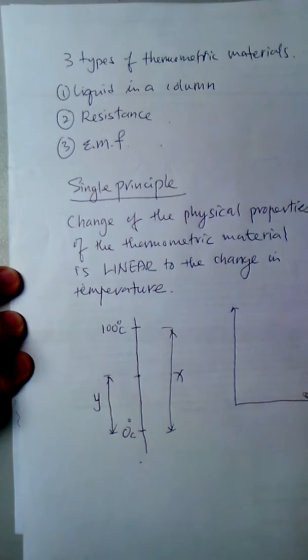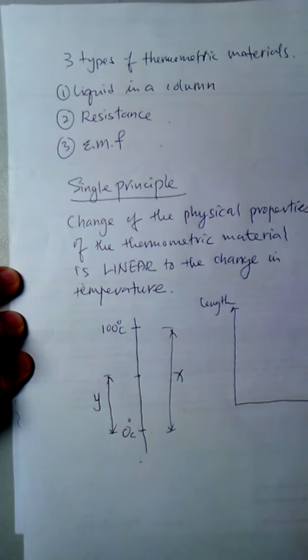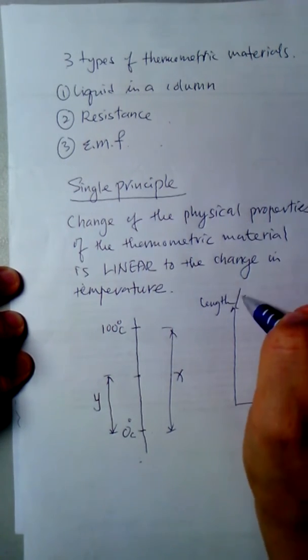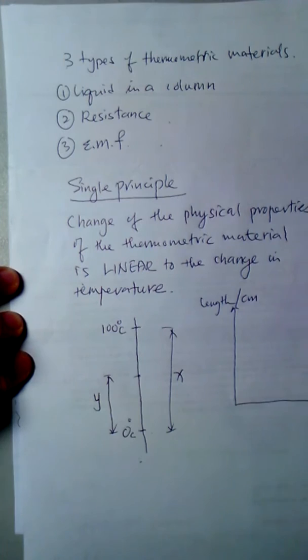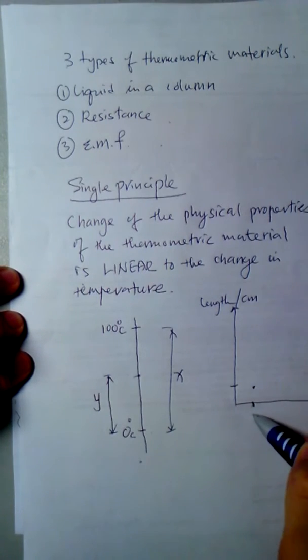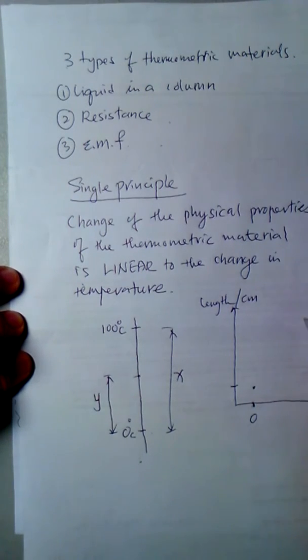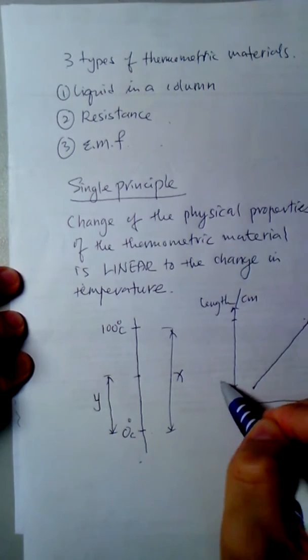A graph of length versus temperature in cm. You will calibrate this length in liquid column starting with zero to 100, then you measure the length here at this point, and it is linear, meaning the line is a straight line, and here is measured as x.